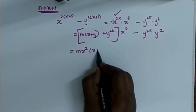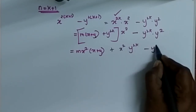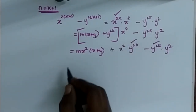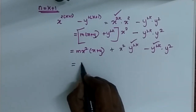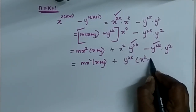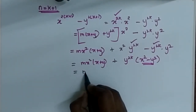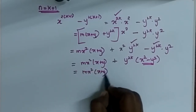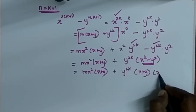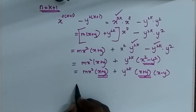Expanding this, I will get MX squared into X plus Y, plus X squared Y power 2K, minus Y power 2K into Y squared. Considering these two terms, I have Y power 2K in common, so I take it outside: plus Y power 2K into X squared minus Y squared. Now I replace X squared minus Y squared with X plus Y into X minus Y. So this equals MX squared into X plus Y, plus Y power 2K into X plus Y into X minus Y. Now in both terms I have X plus Y in common, so I take it outside.